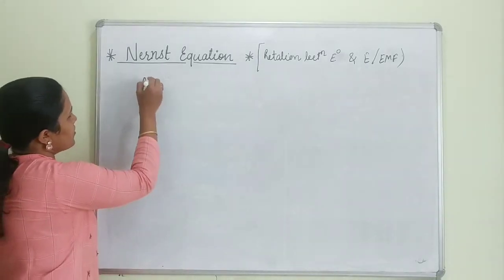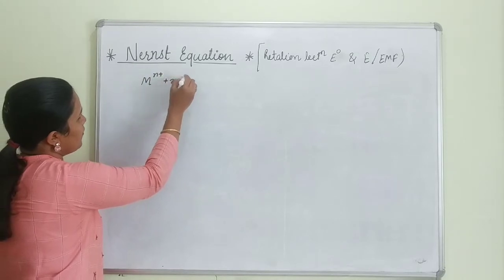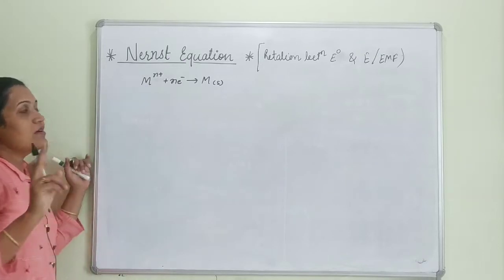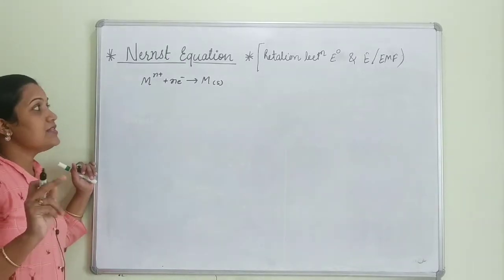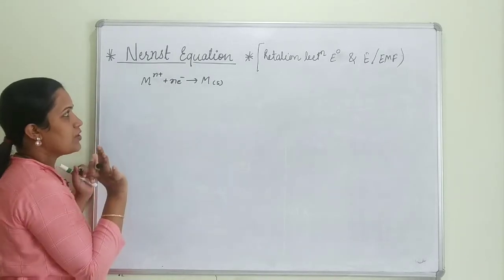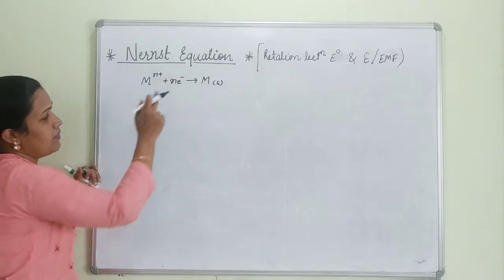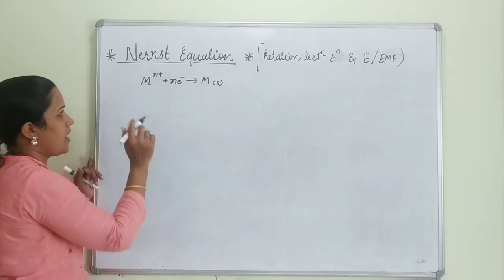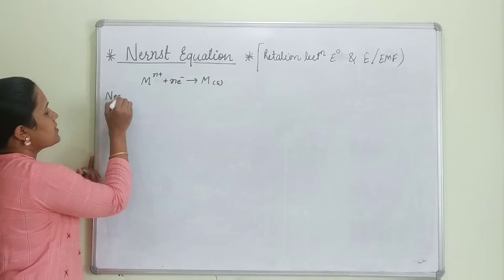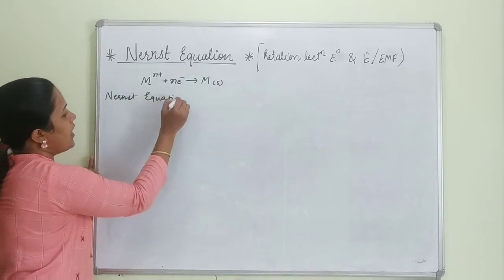Consider a general reduction equation: M^(n+) plus n number of electrons will convert into M(s). Now we are going to write the Nernst equation. The Nernst equation can be written as: E = E° − (RT/nF) × ln([M(s)]/[M^(n+)]).